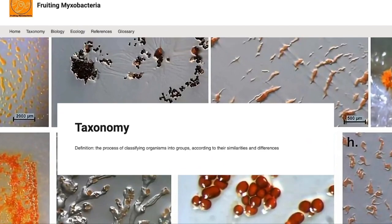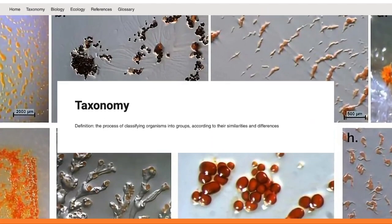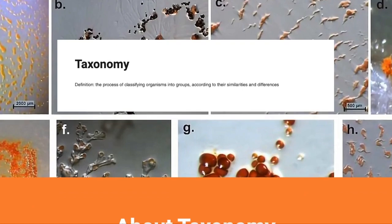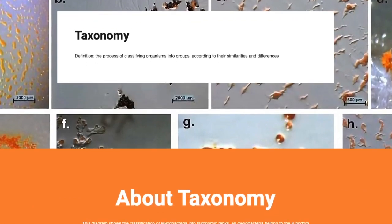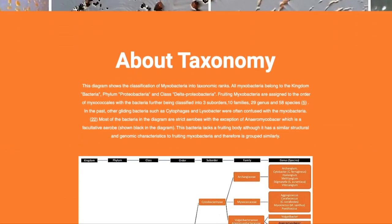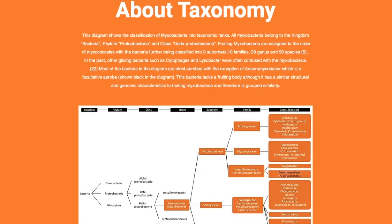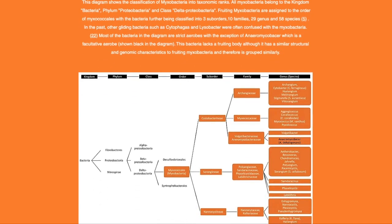Myxobacteria Taxonomy. Taxonomy is the process of classifying organisms into groups according to similarities and differences. From the diagram, you can see that all myxobacteria belong to the kingdom bacteria, phylum proteobacteria, and class delta proteobacteria.